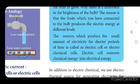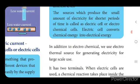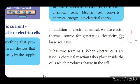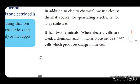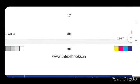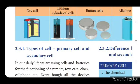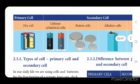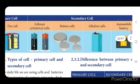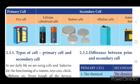An electric cell converts chemical energy into electrical energy. The batteries you use in a watch, TV remote, toy car — those are cells. The supply of electricity for a short period we call that an electric cell. In addition to electrochemical sources, we use electro-thermal sources for generating electricity on a large scale. Electric cells have two terminals. There are two types of cells — primary cell and secondary cell. Example of a primary cell: dry cell. Secondary cell examples: lithium cylindrical cells, button cell, alkaline cells, and automobile battery.